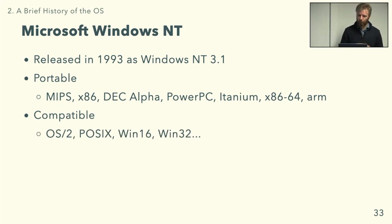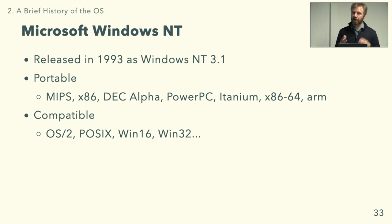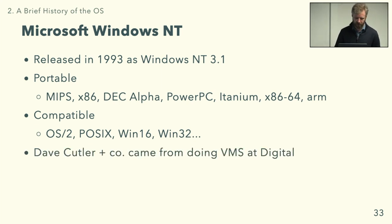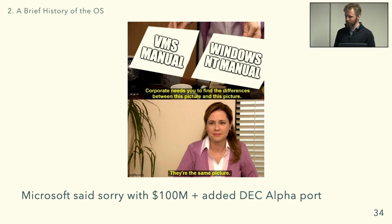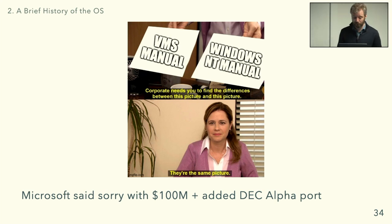Windows NT was designed to be very compatible — it could run OS/2, POSIX, and 16-bit Windows applications through different 'personalities,' though all have gone away now leaving only Win32. It was developed by Dave Cutler and colleagues who came from working on VMS at Digital, which led to a lawsuit when Digital noticed the Windows NT reference manual looked very similar to the VMS one with function names changed. Microsoft said sorry, had some money, and put Windows NT on Alpha — then DEC got bought by Compaq and Alpha got killed.